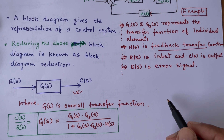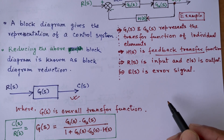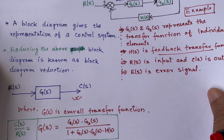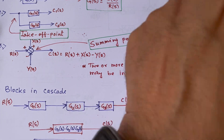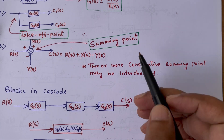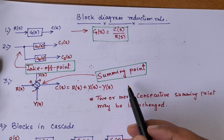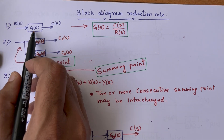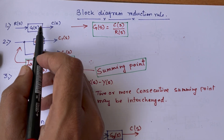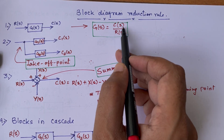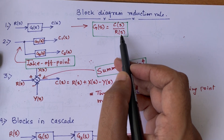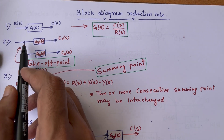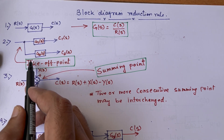Let us start with the rules of block diagram reduction. The first rule: if we have a block, then G(s) is equal to the output divided by the input, so G(s) = C(s) / R(s), where C(s) is the output and R(s) is the input.